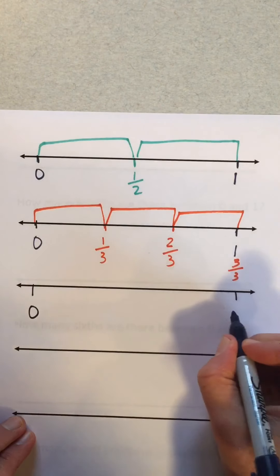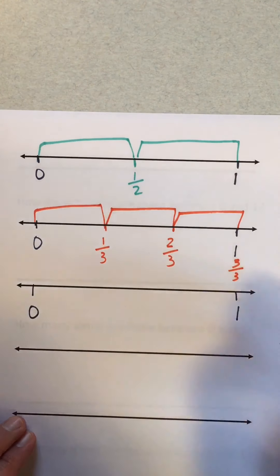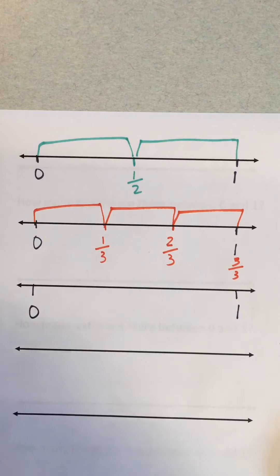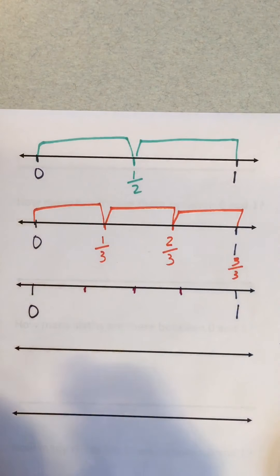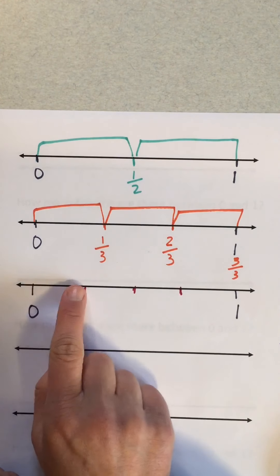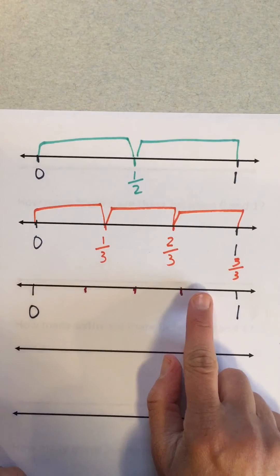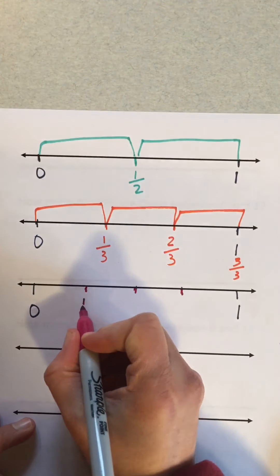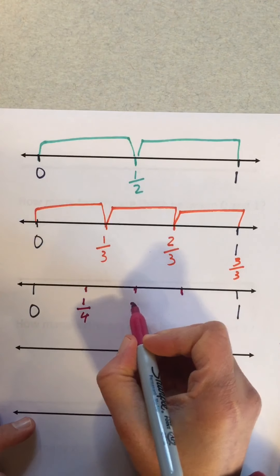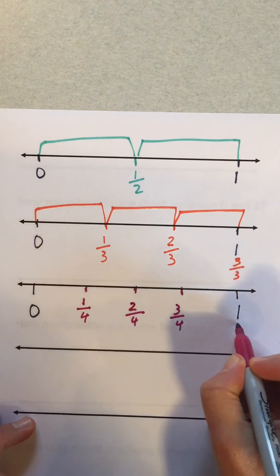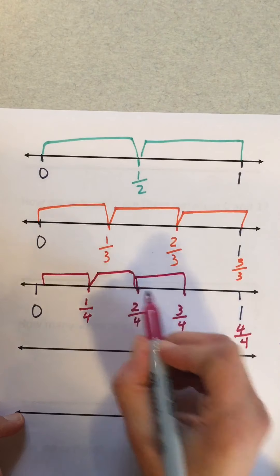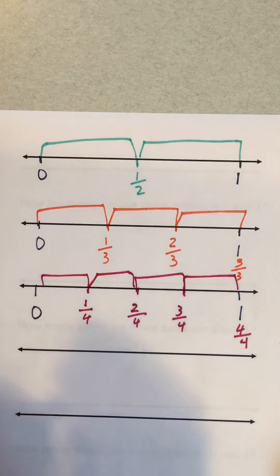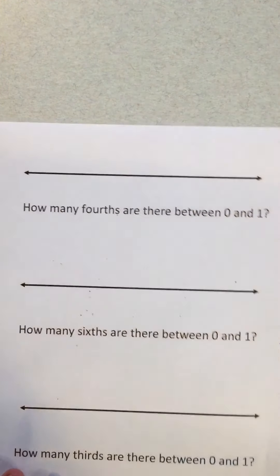In the assignment it's going to ask you: how many thirds? One, two, three — there are three thirds. Let's do another one: zero and one. How many parts did I split it into? One, two, three, and four. This means one over four. One fourth, two fourths, three fourths, four fourths. How many parts? One, two, three, and four.